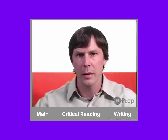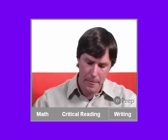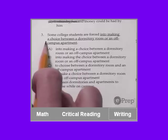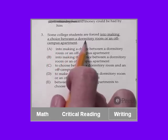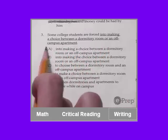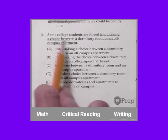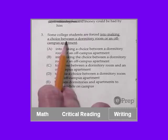This is question three. Let's take our time and do it together. Some college students are forced into making a choice between a dormitory room or an off-campus apartment. Instead of just reading this thing again, let me show you what you need to think about.